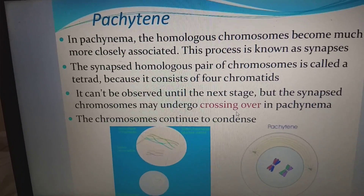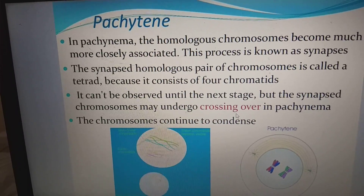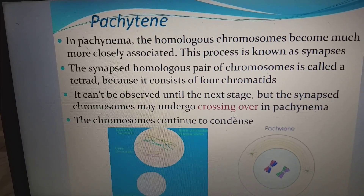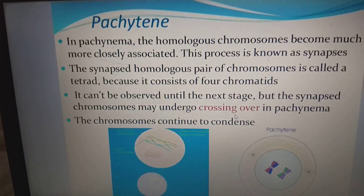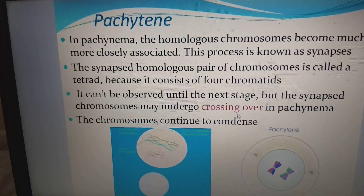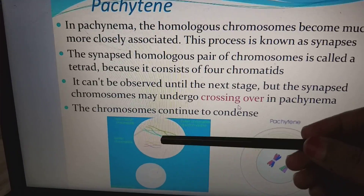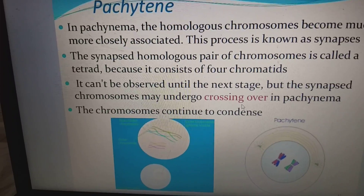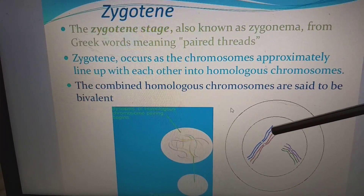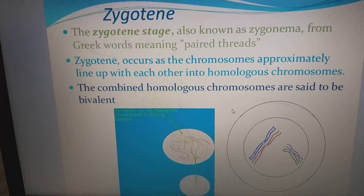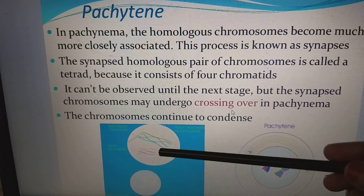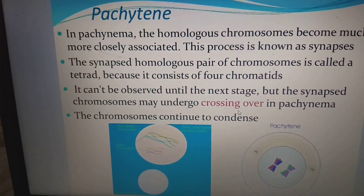In the pachytene stage, homologous chromosomes become much more closely associated in a process known as synapsis. The synapsed homologous pair of chromosomes is called a tetrad because it consists of four chromatids. The synapsed chromosomes may undergo crossing over in the pachytene stage, though it cannot be observed until the next stage. The relationship between two chromatids of the same chromosome is sister chromatids; the relationship between chromatids of different homologous chromosomes is non-sister chromatids. Crossing over takes place between non-sister chromatids.